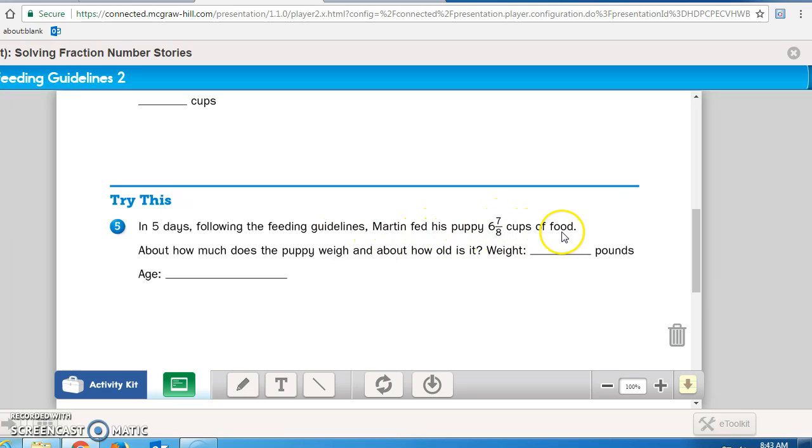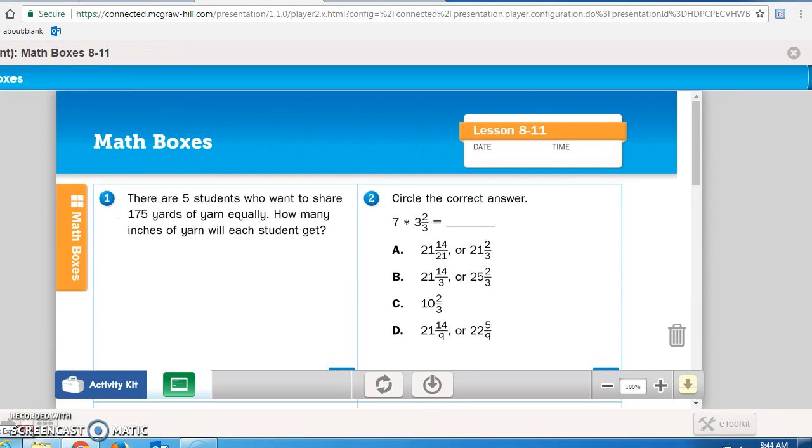And then number 5 says: In 5 days, following the feeding guidelines, Martin fed his puppy 6 and 7/8 cups of food. About how much does the puppy weigh and about how old is it? So first you're gonna have to figure out how much you fed him per day, so you're gonna have to figure out what number added 5 times will come up with 6 and 7/8 cups of food. Pause the recording now. When you finish, bring it up to me so I can check it off on your ACI.